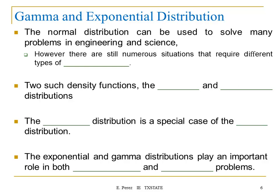As I mentioned earlier in the class, the normal distribution can be used to solve many problems in engineering. However, there are still numerous situations that require different types of density functions. That's why we are extending our discussion. Two such density functions are the gamma and the exponential, and the exponential is the most important.